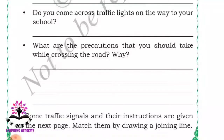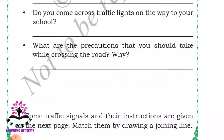What are the precautions that you should take while crossing the road and why? We have to follow the traffic rules and see the traffic signals. The traffic signal contains red, yellow, and green lights. We have to be careful and cross the road on the zebra crossing. We have to follow the instructions given by the traffic department. You should not play games on the road. Safe movement of people and vehicles is very important.